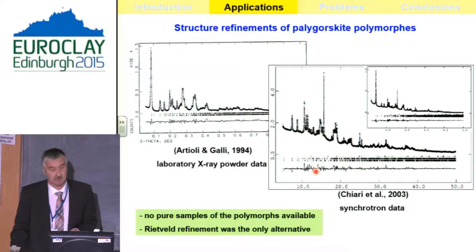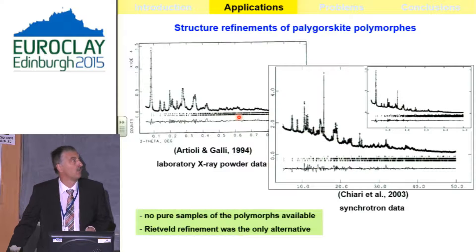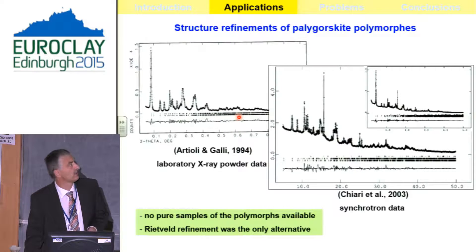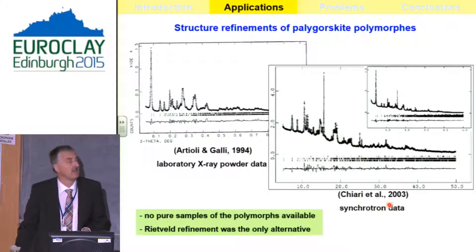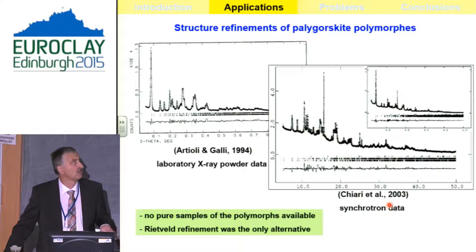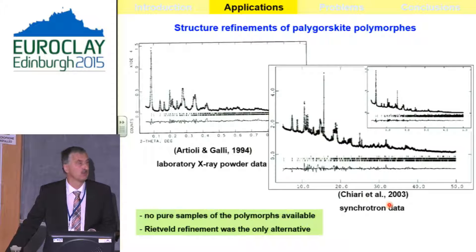More examples exist — for example, the palygorskite polymorphs, which were refined first with laboratory X-ray powder data and then from synchrotron data. It was important that this material always consists of two polymorphs, the monoclinic and the orthorhombic one, and so the Rietveld refinement was the only alternative.